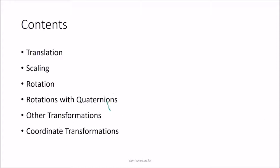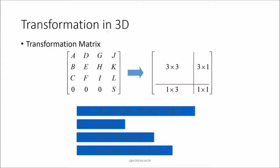We have already discussed translation, scaling, and rotation along with their matrices. The 3D transformation matrix is a 3x3 matrix used for scaling, reflection, shearing, and rotation — the values a, b, c through i vary depending on the operation. Translation parameters are placed separately, and there is also a uniform global scaling component. This is the homogeneous representation of the transformation matrix.